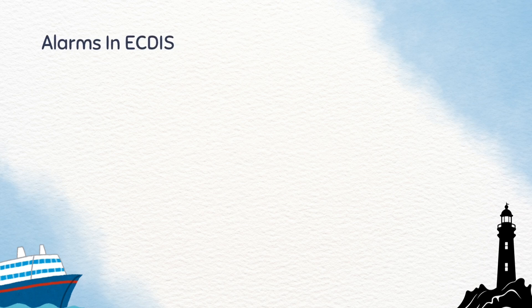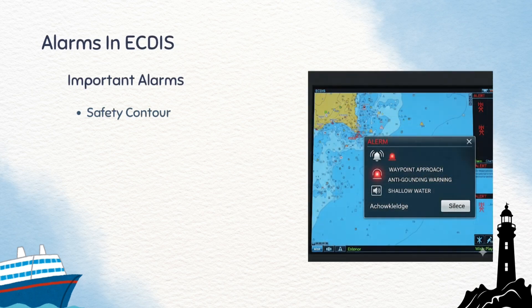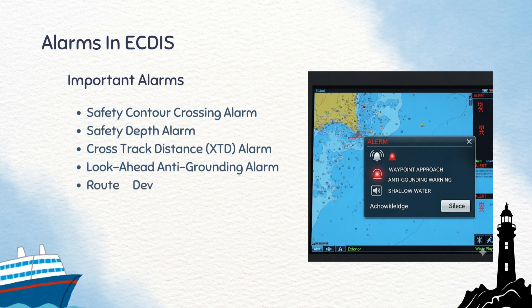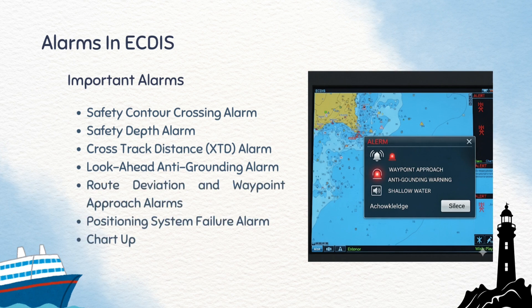EGDIS provides various alarms to ensure safe navigation. The important alarms include: safety contour crossing alarm, safety depth alarm, cross-track distance alarm, look-ahead anti-grounding alarm, route deviation and waypoint approaching alarm, position system failure alarm, chart update alarm, and collision risk alarm — that is CPA and TCPA.